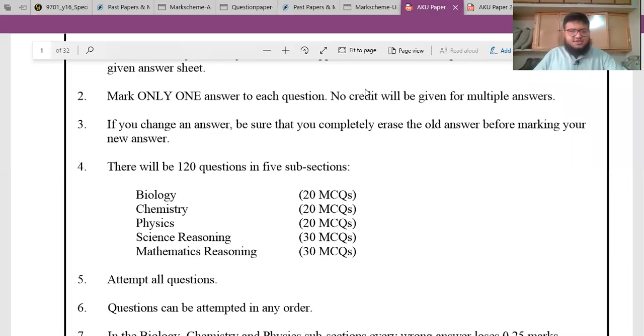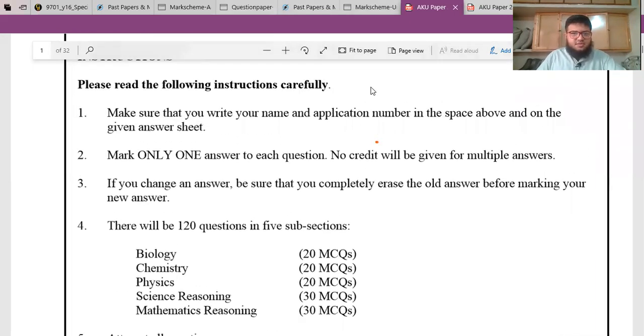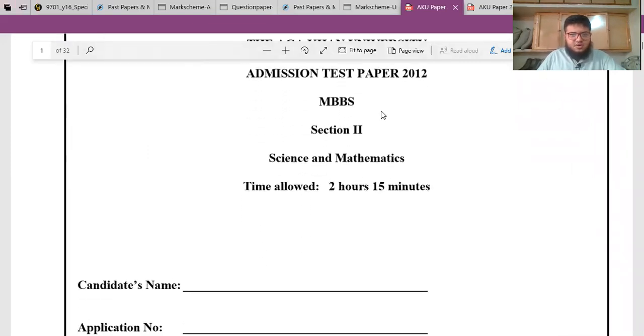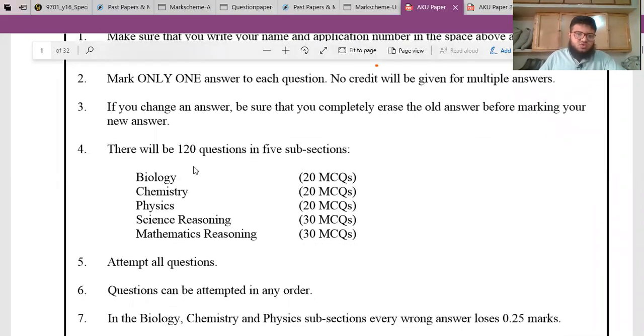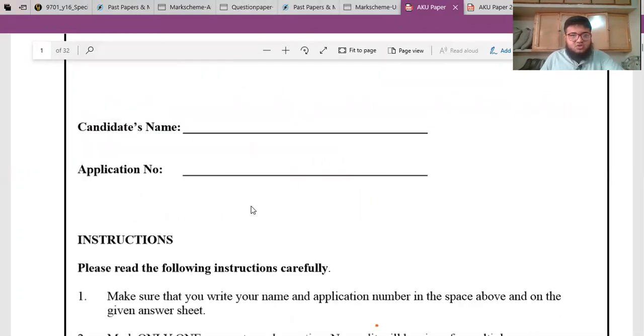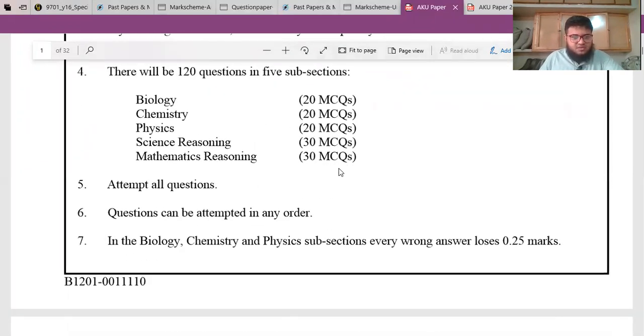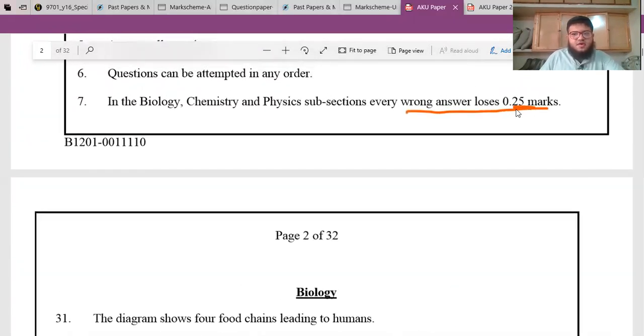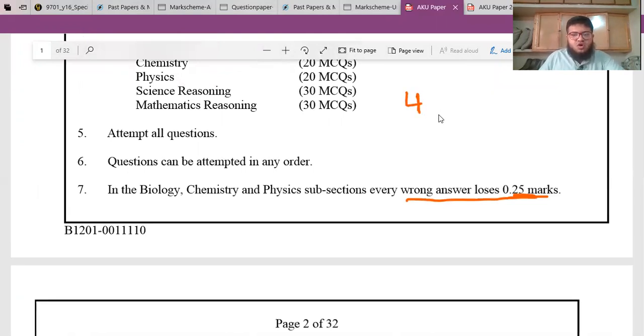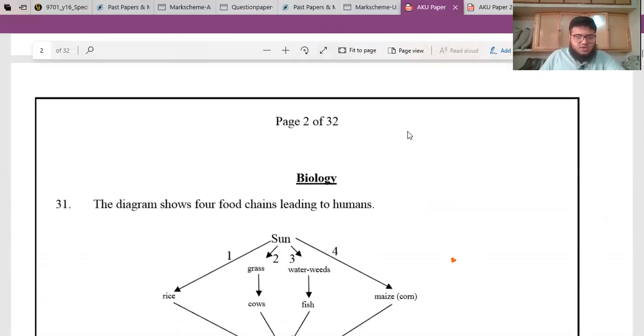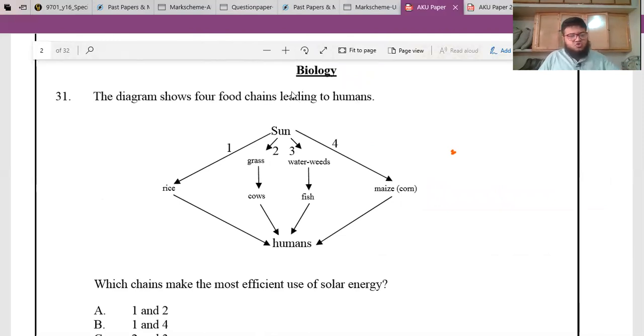Assalamualaikum guys, this is your instructor Shafat Khan and I'm back with another important video. In this video we will practice AKU past paper which I got when I was preparing. This is helpful so you have an idea which type of questions are asked. This is the paper pattern: Biology, Chemistry, Physics 2020, Science Reasoning 30, Math Reasoning 30. Think about negative marks, it's 0.25, so after every 4 wrong answers 1 mark will be deducted from your total marks. Now let's get started, I will solve the biology in this video.